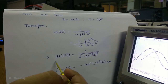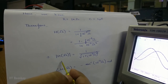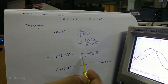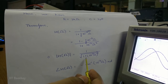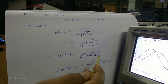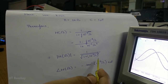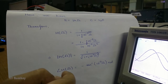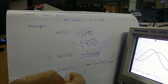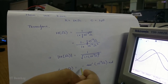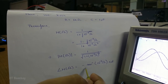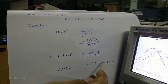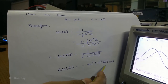Hence, the amplitude of the transfer function can be written as 1 upon the square root of (1 + (10⁻³·Omega)²), and the argument of the transfer function can be written as minus tan⁻¹(10⁻³·Omega).